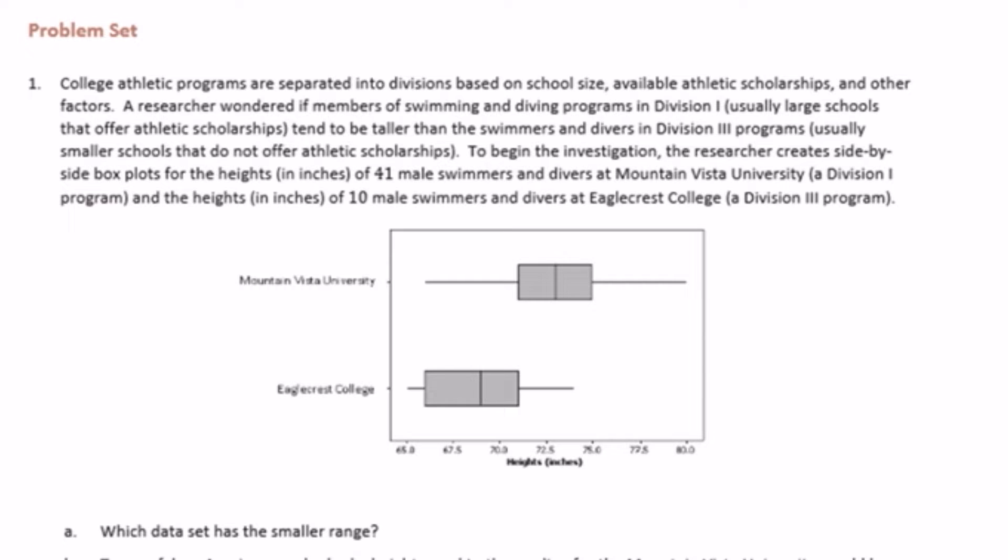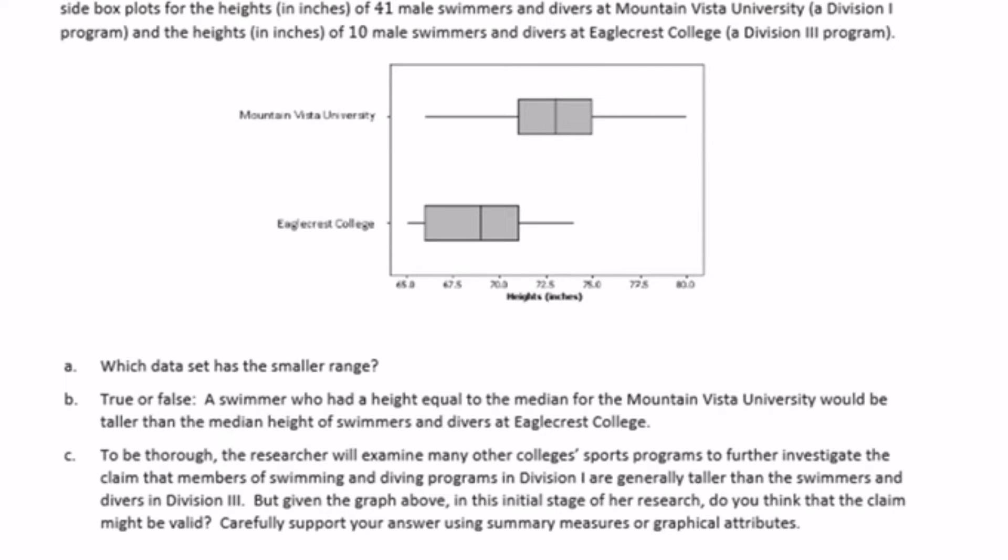College athletic programs are separated into divisions based on school size, available athletic scholarships, and other factors. A researcher wondered if members of swimming and diving programs in Division 1, usually larger schools that offer athletic scholarships, tend to be taller than the swimmers and divers in Division 3 programs, usually smaller schools that do not offer athletic scholarships. To begin the investigation, the researcher creates side-by-side box plots for the heights in inches of 41 male swimmers and divers at Mountain Vista University, a D1 program, and the heights in inches of 10 male swimmers and divers at Eagle Crest College, a Division III program. We can see here the two different box plots. Here's Mountain Vista University and here's Eagle Crest College.